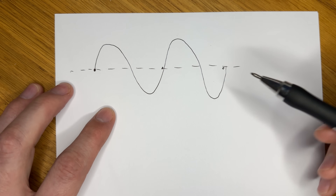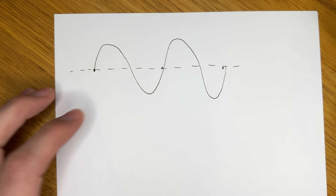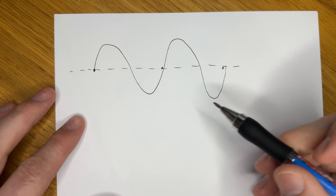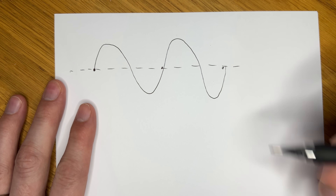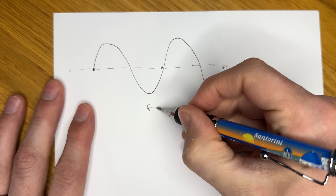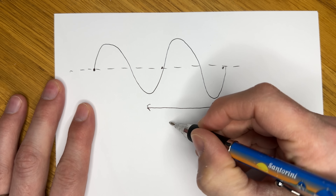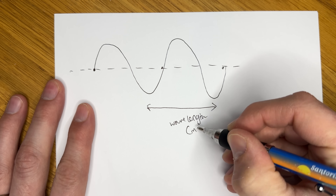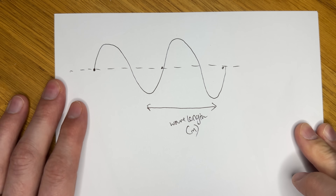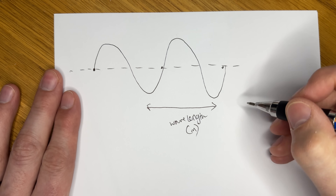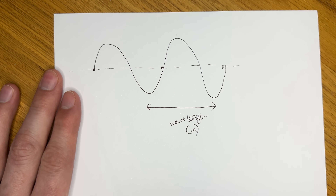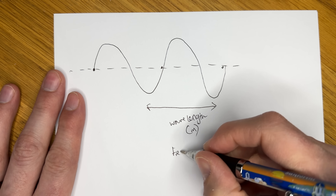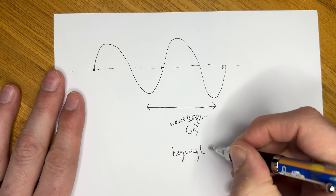Before we actually conduct our experiment, we need to go over a little bit of wave science first. Here we have a wave, and we know a few things about it. The wavelength is the distance covered by one full wave cycle, so peak-to-peak or trough-to-trough, and we measure this in metres. Frequency is the number of full waves that pass one point in one second, and we measure frequency in hertz.